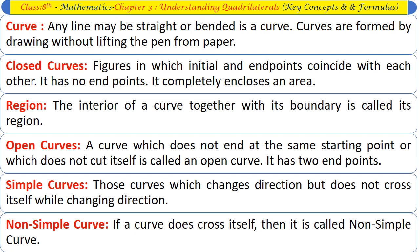An open curve has two end points. Simple curves: Those curves which change direction but do not cross themselves while changing direction. Non-simple curve: If a curve crosses itself, it is called a non-simple curve.